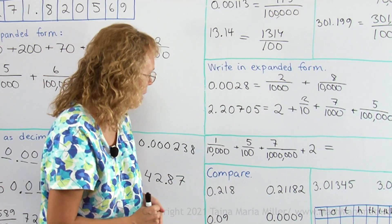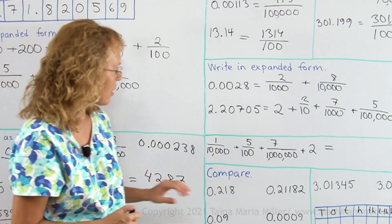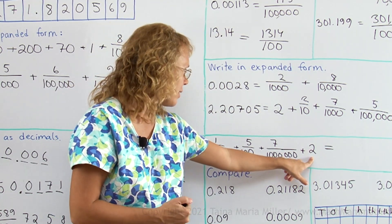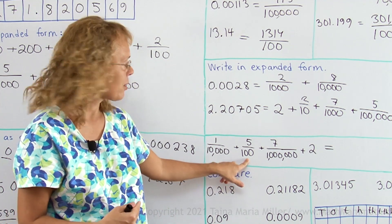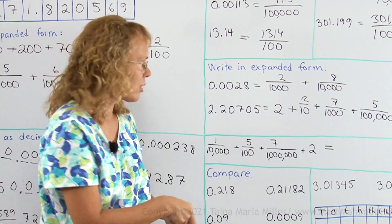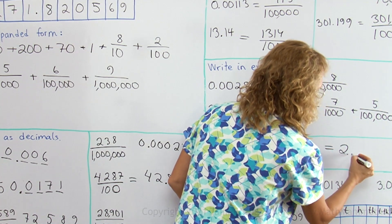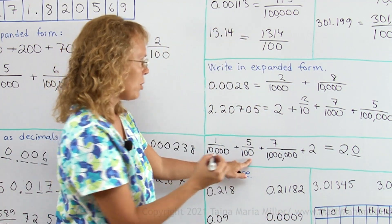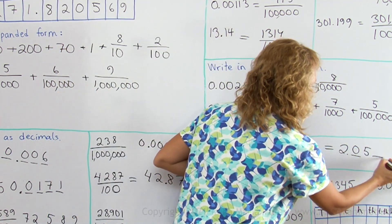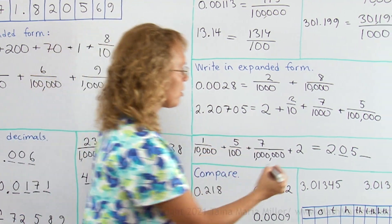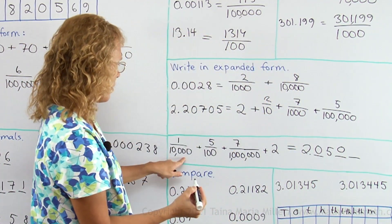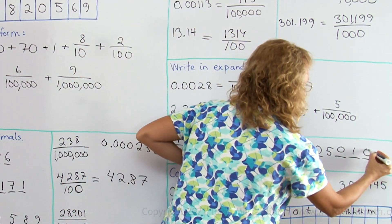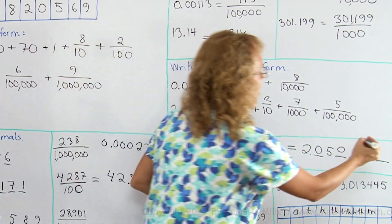Now here is a number written in expanded form — let's write it as a single decimal. But the parts are in scrambled order. My biggest one is here: two ones or two units. Then would come the hundredths — it's actually skipping the tenths. Let's start writing it: there's two, then a point. For tenths I have nothing, so zero there. Hundredths — I do have five of them. Then would come thousandths — nothing there, so zero. Then ten-thousandths — that's one of them. Hundred-thousandths — nothing there again. And lastly millionths — seven of them.